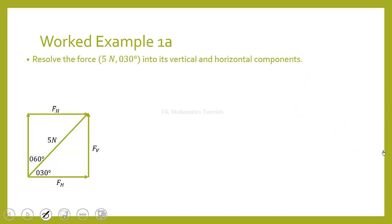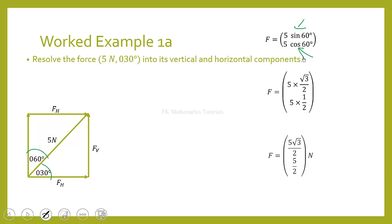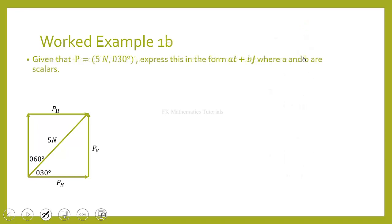You can also use the upper triangle. The angle from the vertical is 90° − 30° = 60°. In that case, the horizontal component is 5 sin 60° and the vertical component is 5 cos 60°, which gives the same result.